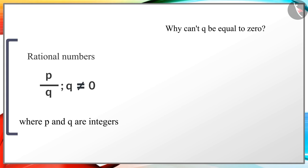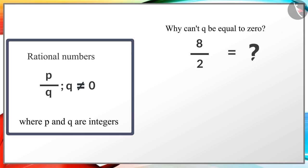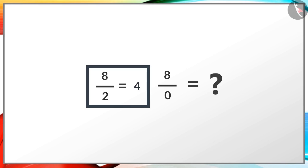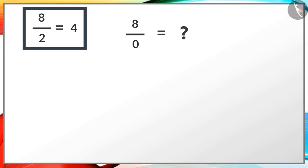Sir, why can't q be equal to zero? Mohan, if I ask you the value of 8 by 2, what will you do? Sir, I will search for a number which when multiplied by 2 gives me 8, and that number is 4. Well done, Mohan. Now what is the value of 8 by 0? Sir, this cannot be found. I can't find any number which gives me 8 when multiplied by 0. Rightly said, Mohan, and we call such a number undefined.